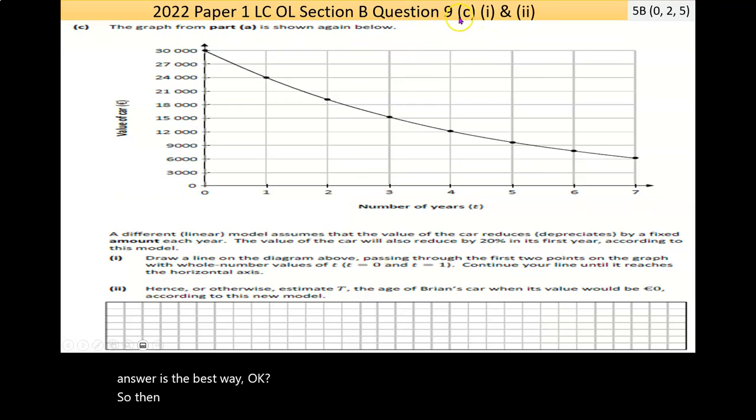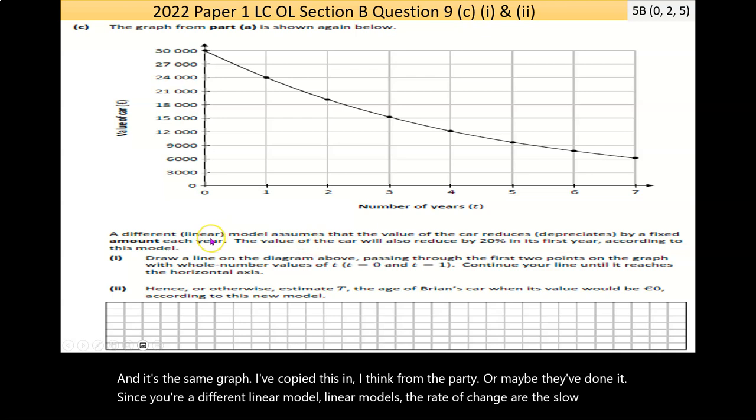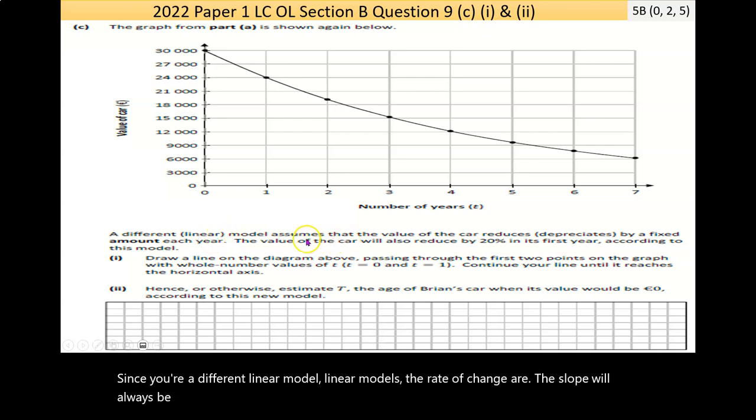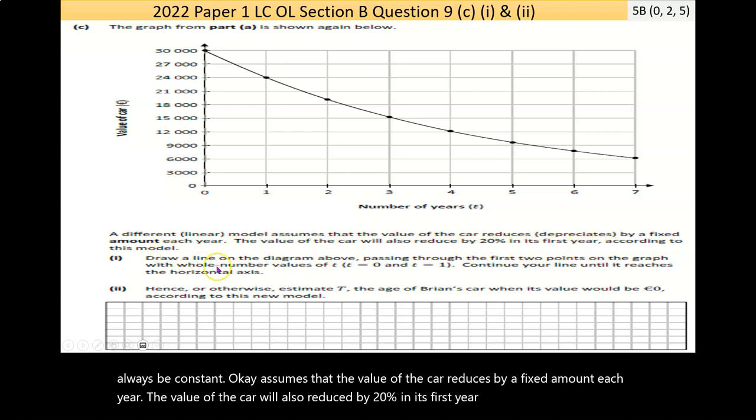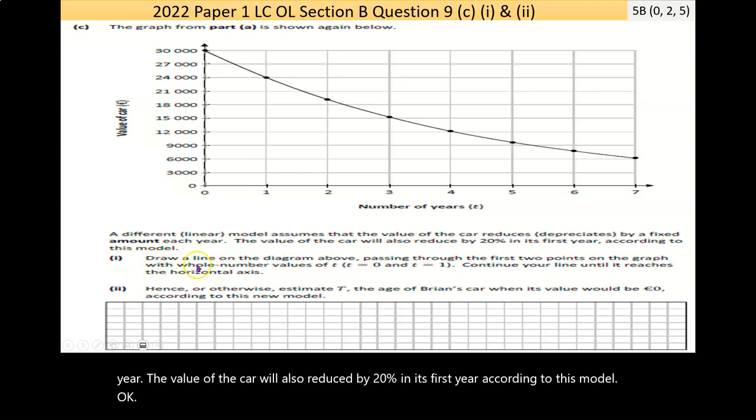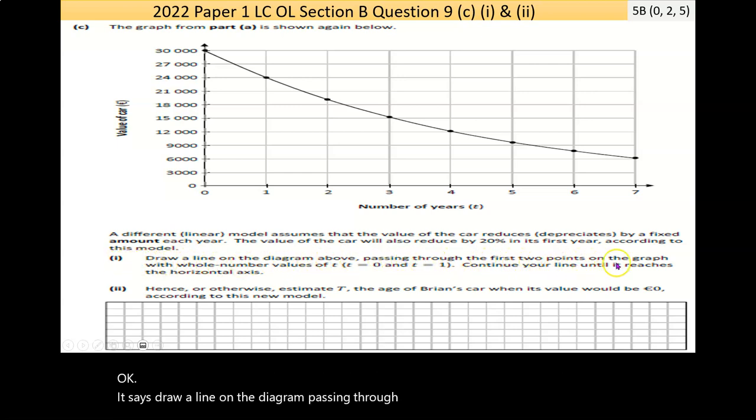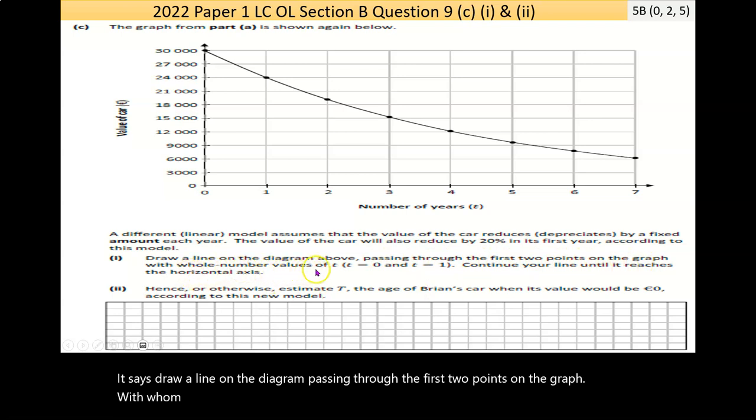9C part one and two, this is the one I meant earlier that have been marked together for only five B marks. It's the same graph. It says here a different linear model. Now, linear models, the rate of change, or the slope, will always be constant. It assumes that the value of the car reduces by a fixed amount each year. The value of the car will also reduce by 20% in its first year, according to this model.